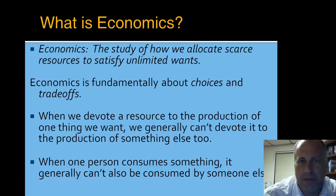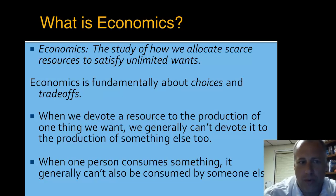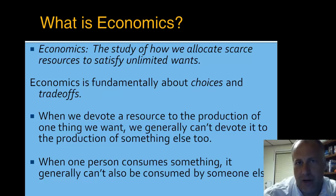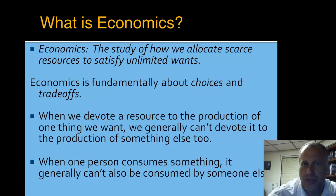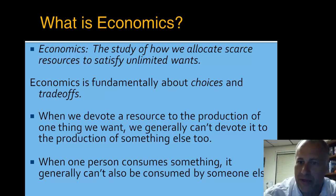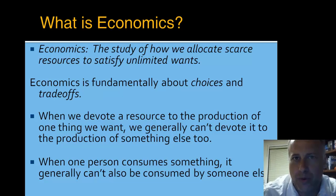Fundamentally, this brings about the notion of trade-offs — that economics is about the choices we make and the trade-offs that we face. When we devote a resource to the production of one particular thing, we usually can't devote it to the production of something else. For instance, if I want to build a parking lot on a particular piece of land, I can't also use that same land as a corn field, a soybean field, and a wheat field. When I devote a resource to the production of some good, I use it for that good, and that's what we're constrained to.